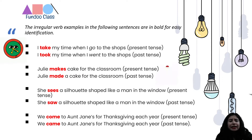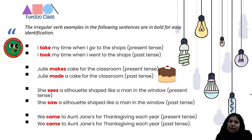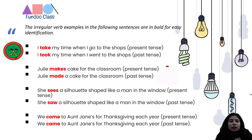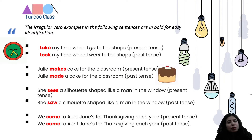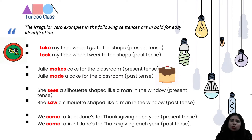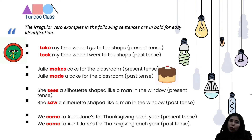For example: 'I take my time when I go to the shop' — this is a habit, so we use present tense. In past tense, we use 'took', which is the past form of 'take' — an irregular verb. And 'when I went' — 'go' becomes 'went' in past tense. That's another case where we are using irregular verbs.